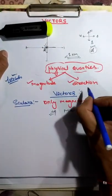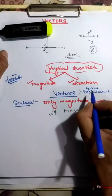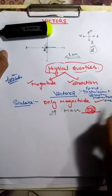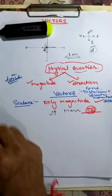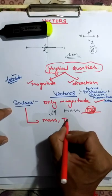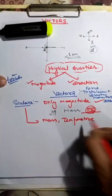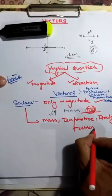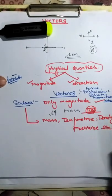Some examples of vectors are: force, displacement, velocity, and momentum. Some examples of scalars are: mass, temperature — you just specify the temperature without a direction — density, and pressure.